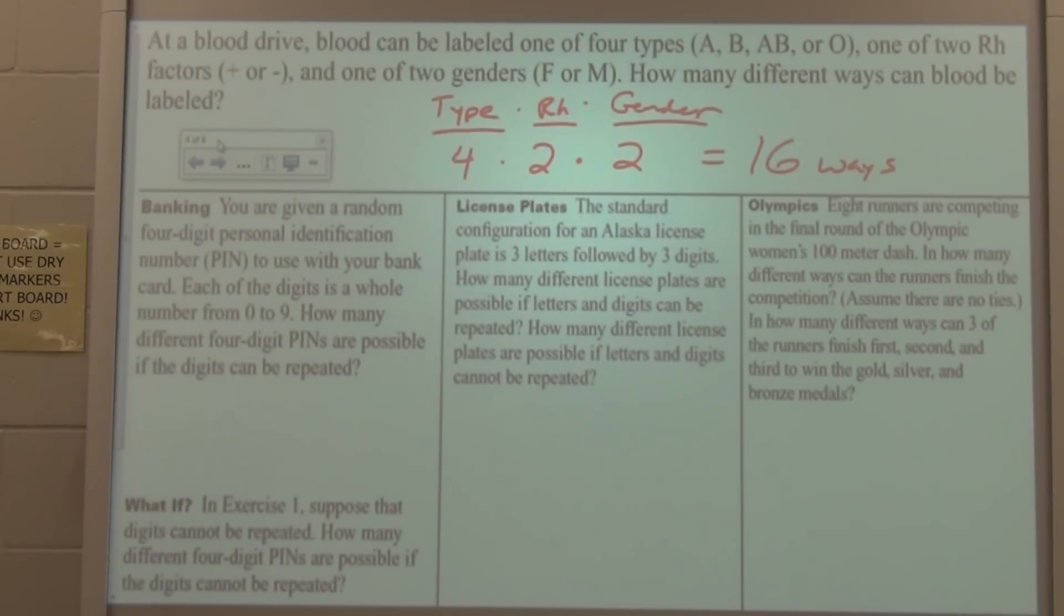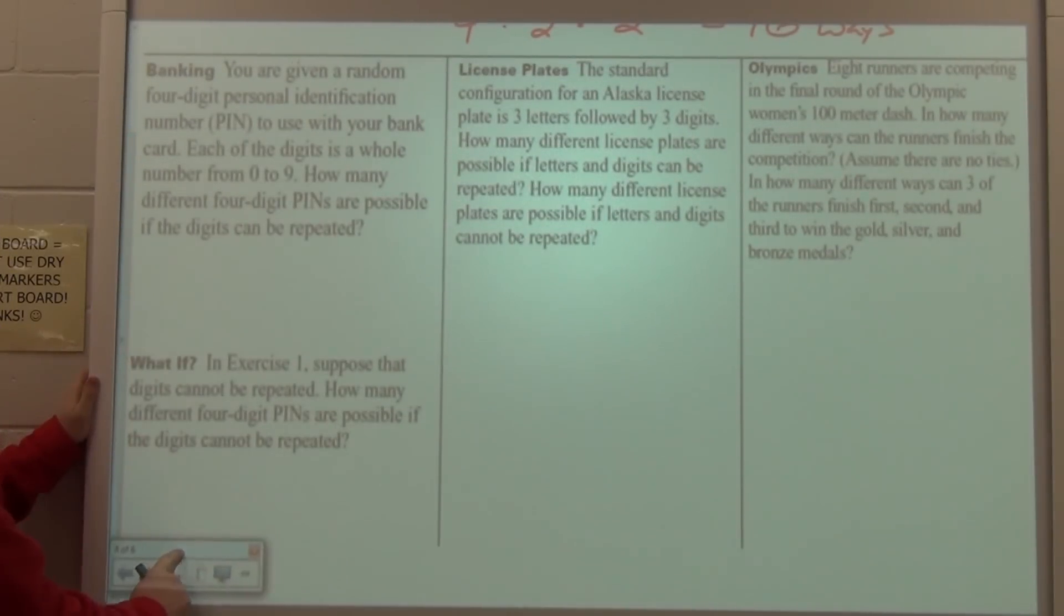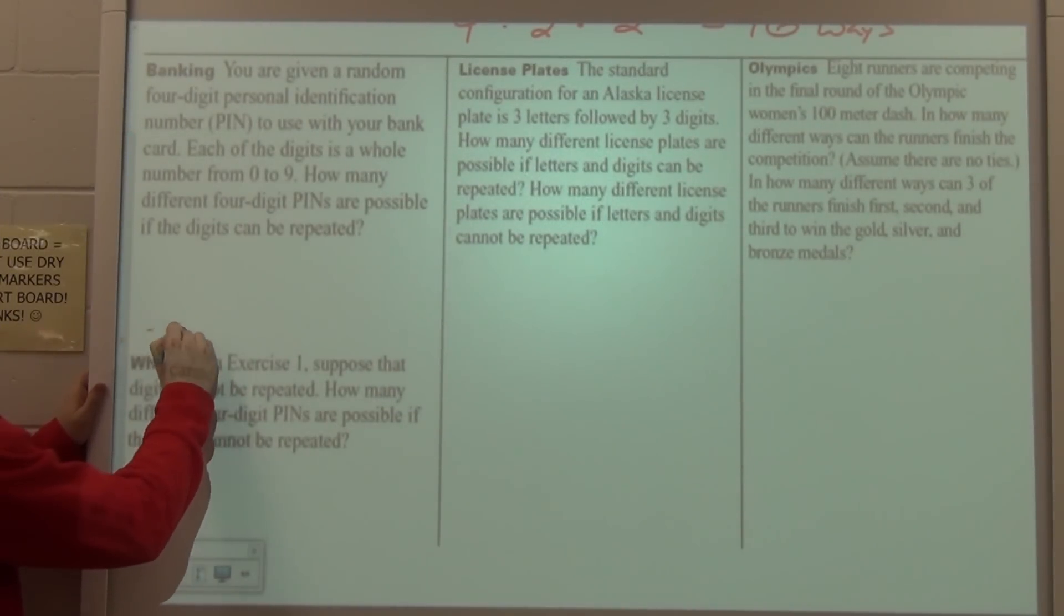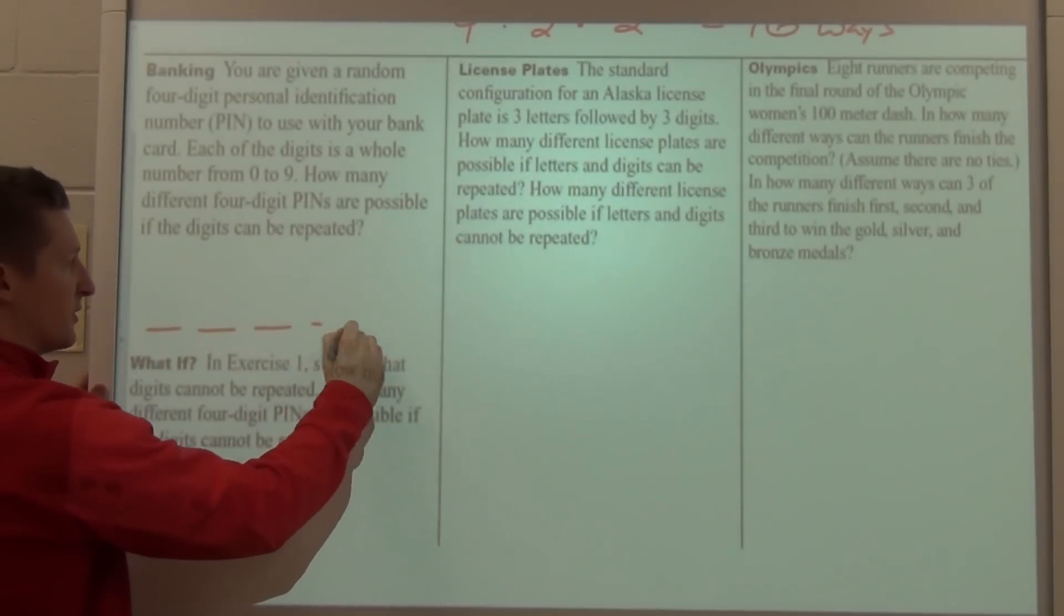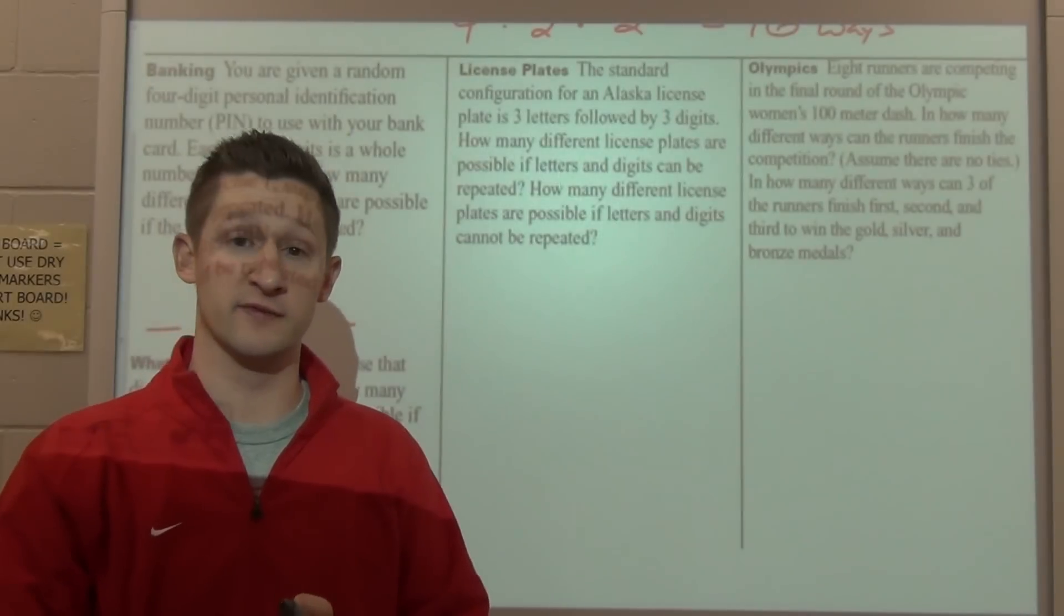Now, as you set this one up, I think with a lot of these problems, the best way to work it is by drawing a couple of blanks. As in, I'm going to figure out, well, I need four digits, right? One, two, three, four. And then I think about, how many options do I have for each of those digits?